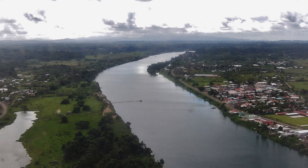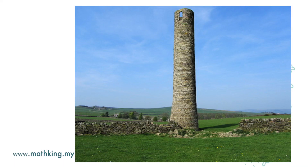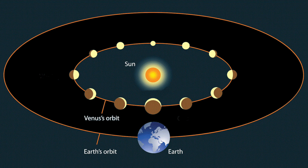There are many triangles that we can draw in the real world. For example, we can draw a right angle triangle and use the ratio of the sides to find the width of a river. We can draw another right angle triangle and use the ratio to find the height of a tower. This is the diagram of our solar system — we can even draw a triangle and use the ratio to find the distance from the earth to the sun.